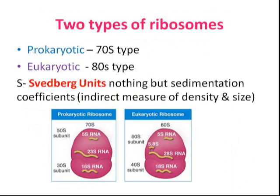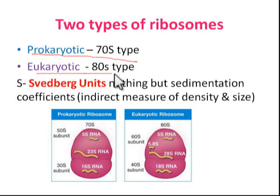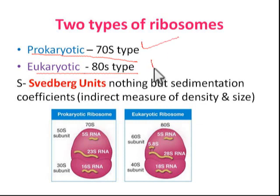There are two important types of ribosomes: prokaryotic and eukaryotic. The prokaryotic type is 70S and the eukaryotic type is 80S. The 'S' stands for Svedberg unit, which is the sedimentation coefficient.